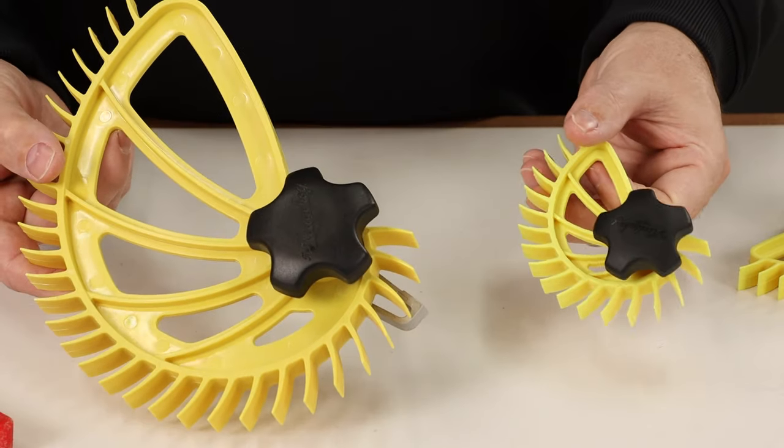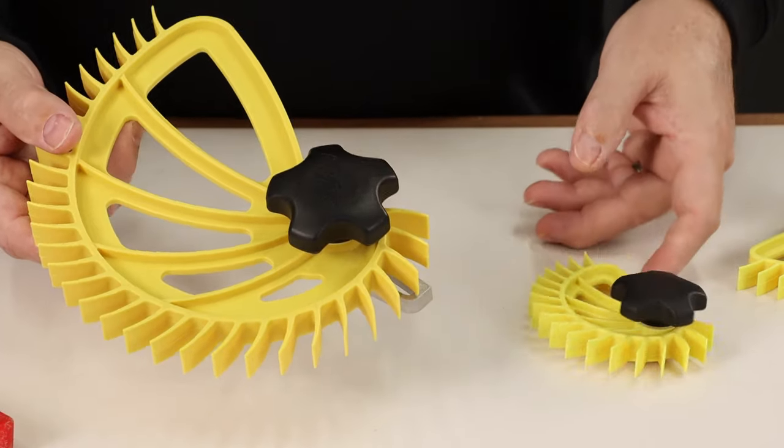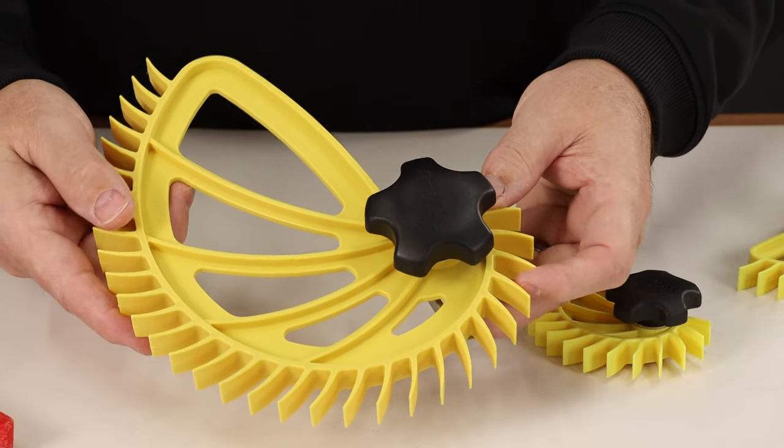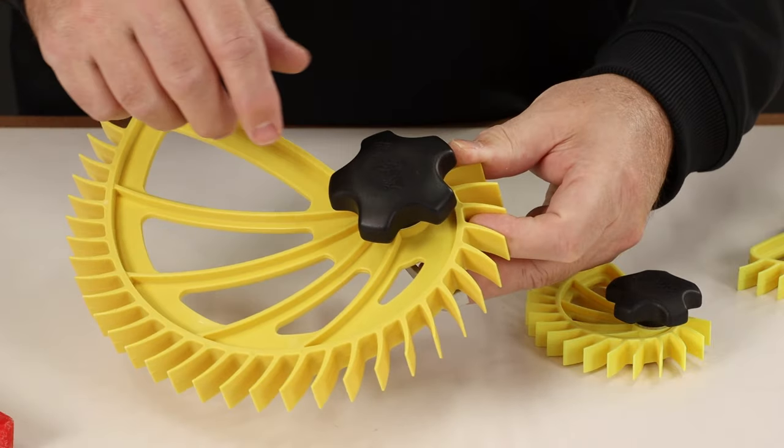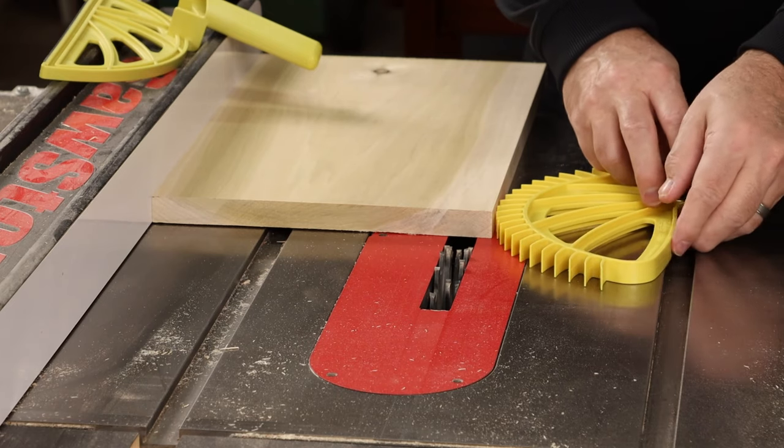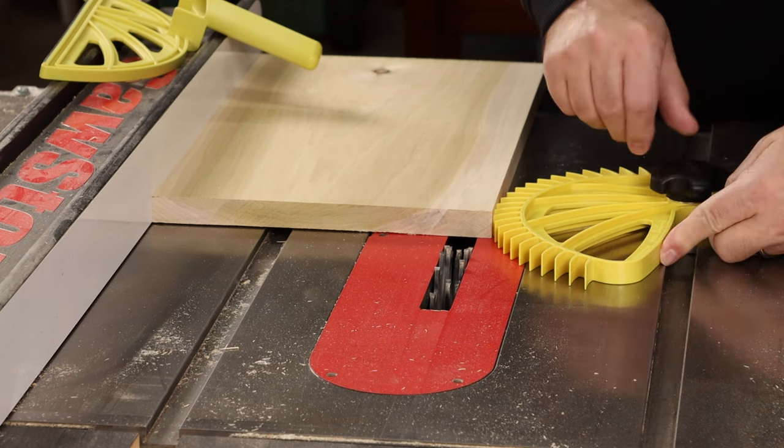Both of these feather boards have a single pivot point and that's different than most feather boards you'll see. Usually there's two knobs that run in slots and you move the whole thing left and right. With this you just loosen the one knob and then you rotate it as needed so you start to get pressure with the feathers.